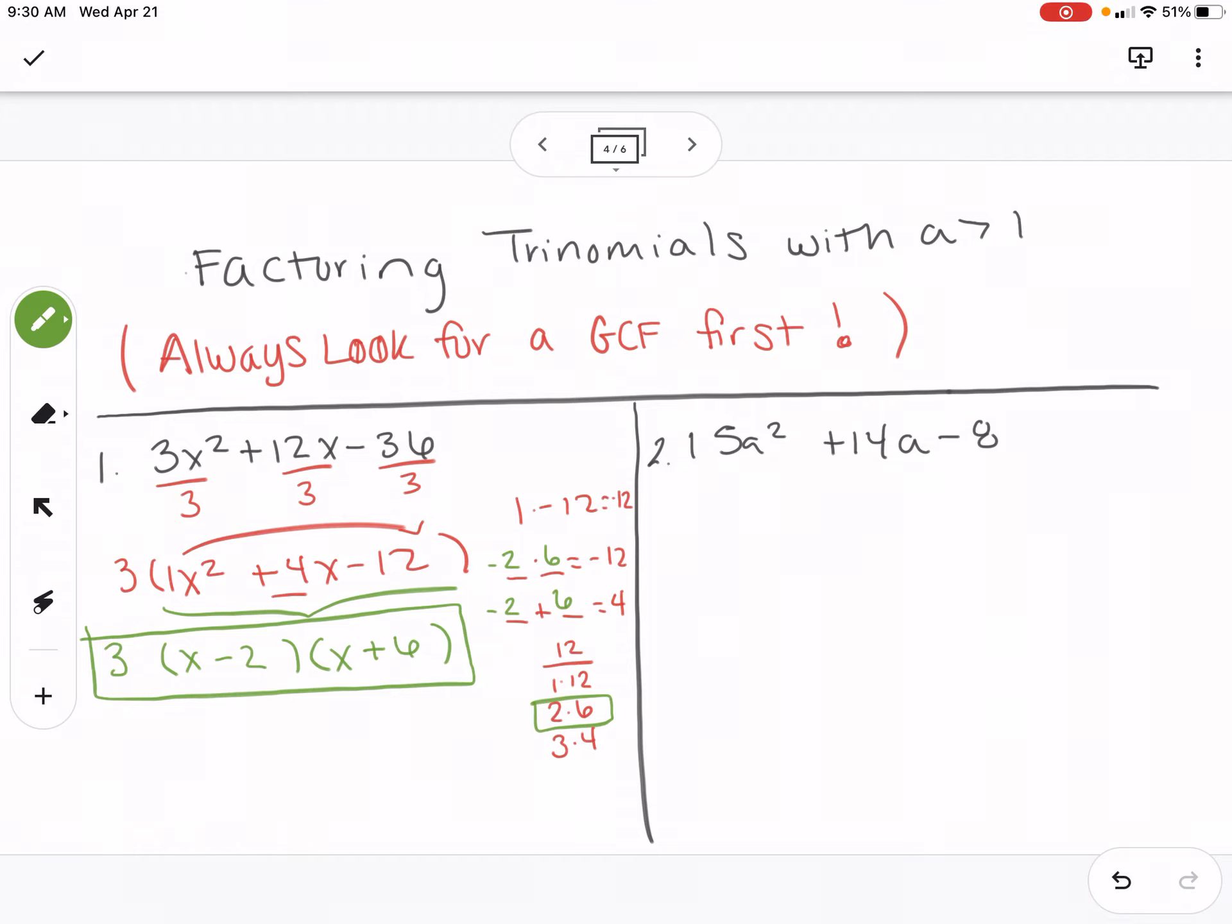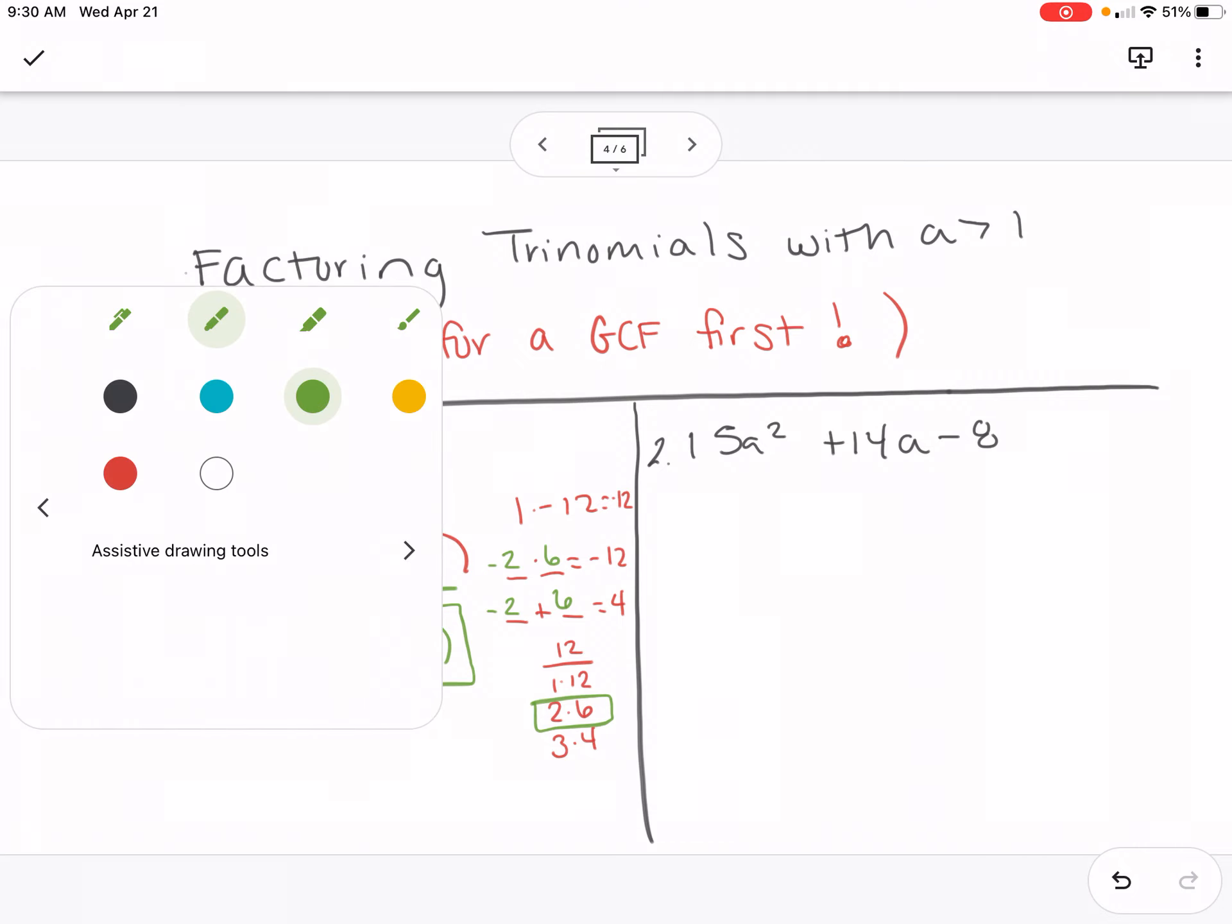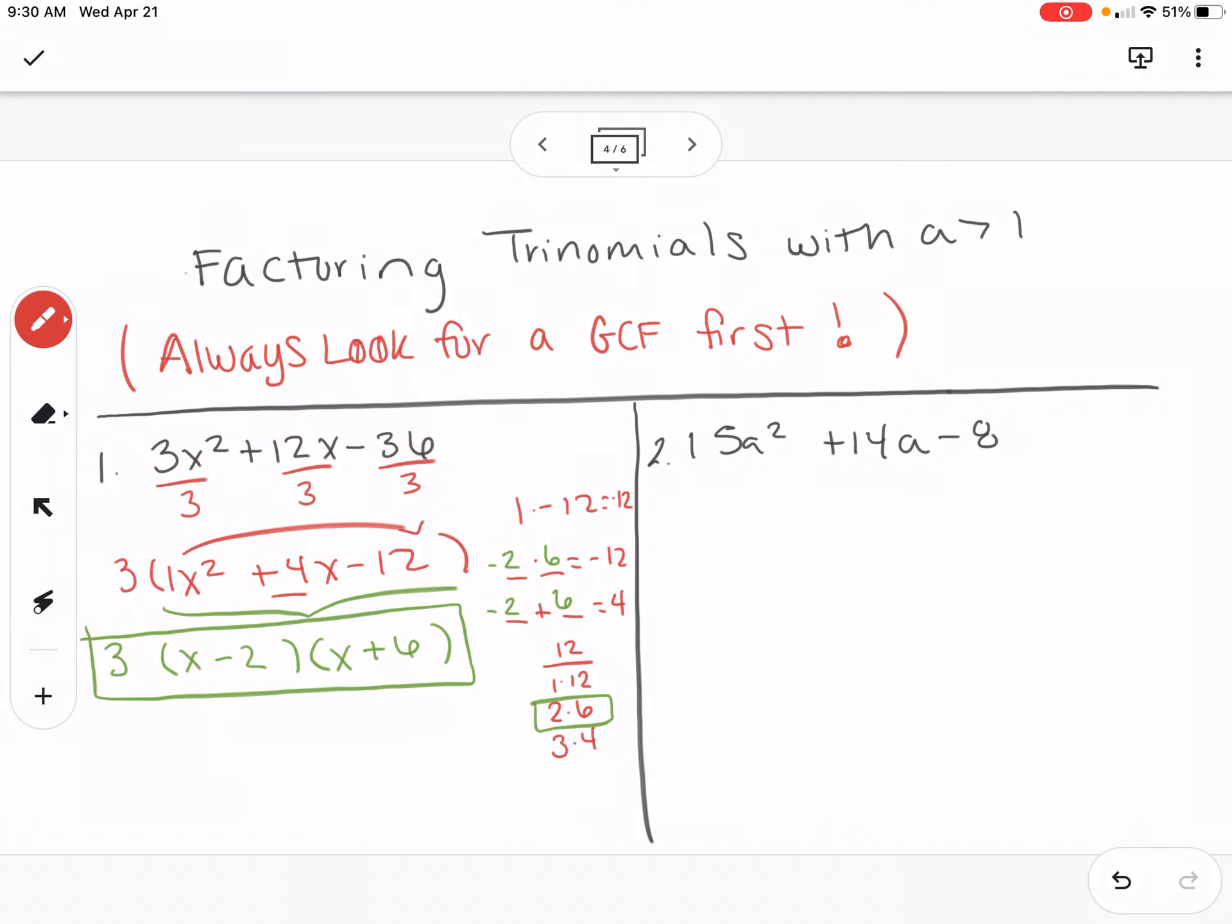So again, always check if there's a greatest common factor first. And number 2, I'm checking for a greatest common factor. But 15, 14, and 8 don't have one.